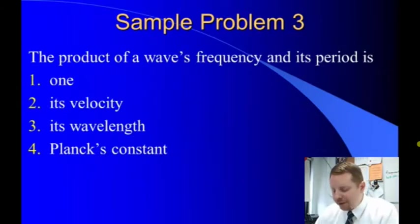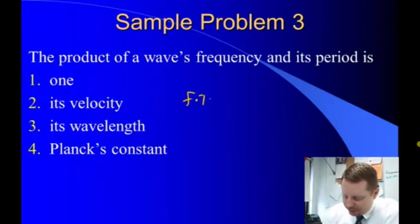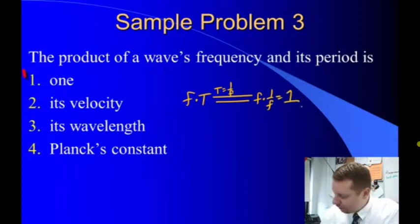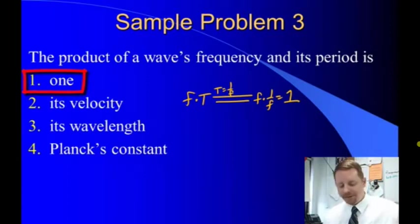The product of a wave's frequency and its period is what? Well, frequency times period equals — if period is one over frequency, we could write this as frequency times one over frequency, which is equal to one. So a wave's frequency times its period must always be one.